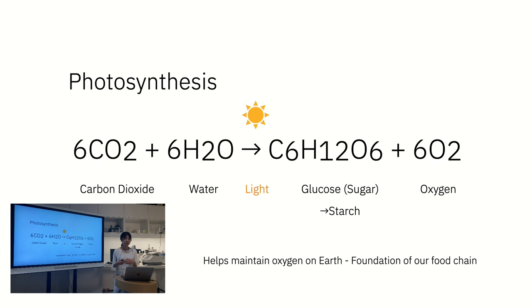What is photosynthesis? Photosynthesis is a chemical process where carbon dioxide and water is combined with the energy of light, and then glucose — which is a type of sugar — is created inside the leaf, and oxygen is released. The glucose, when connected, becomes a chain polymer called starch. This helps maintain the oxygen on Earth and becomes the foundation of our food chain, meaning that animals and humans have to gather food or hunt for energy, but plants can use this chemical process to create their own food.